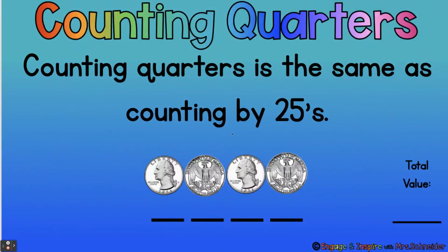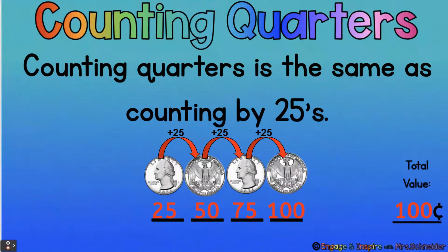Counting quarters is the same as counting by 25s. Let's count these four quarters: 25, 50, 75, 100. 100 cents is the same as one dollar. Three quarters equals 75 cents — for some reason that's the hardest for students to remember, so let's pay extra attention to that. And if you forget that four quarters equals 100 cents, you can remember that two quarters equals 50 cents, so two quarters plus two quarters is 100 cents, because 50 plus 50 is 100.